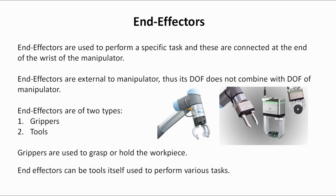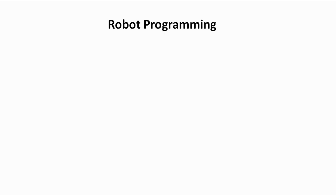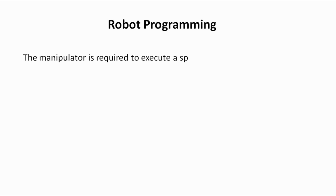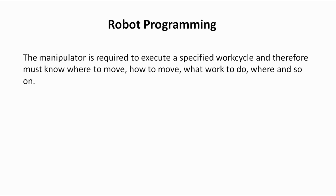Having completed the study of the basic structure of the manipulator, we will now study robot programming. Robots are required to do some work cycle, but robots have no intelligence of their own — they need to be taught how, when, where, and in what sequence to do a particular task. The teaching of the work cycle to a robot is known as robot programming.